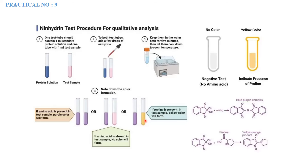If the test sample shows yellow color, it indicates the presence of specific amino acids (like proline), not full proteins. If no color change occurs, this means a negative test — no amino acid present. Purple color indicates the presence of amino acids and proteins. Yellow color indicates specific amino acids but not standard proteins. No color change means no amino acids and no proteins in the sample.